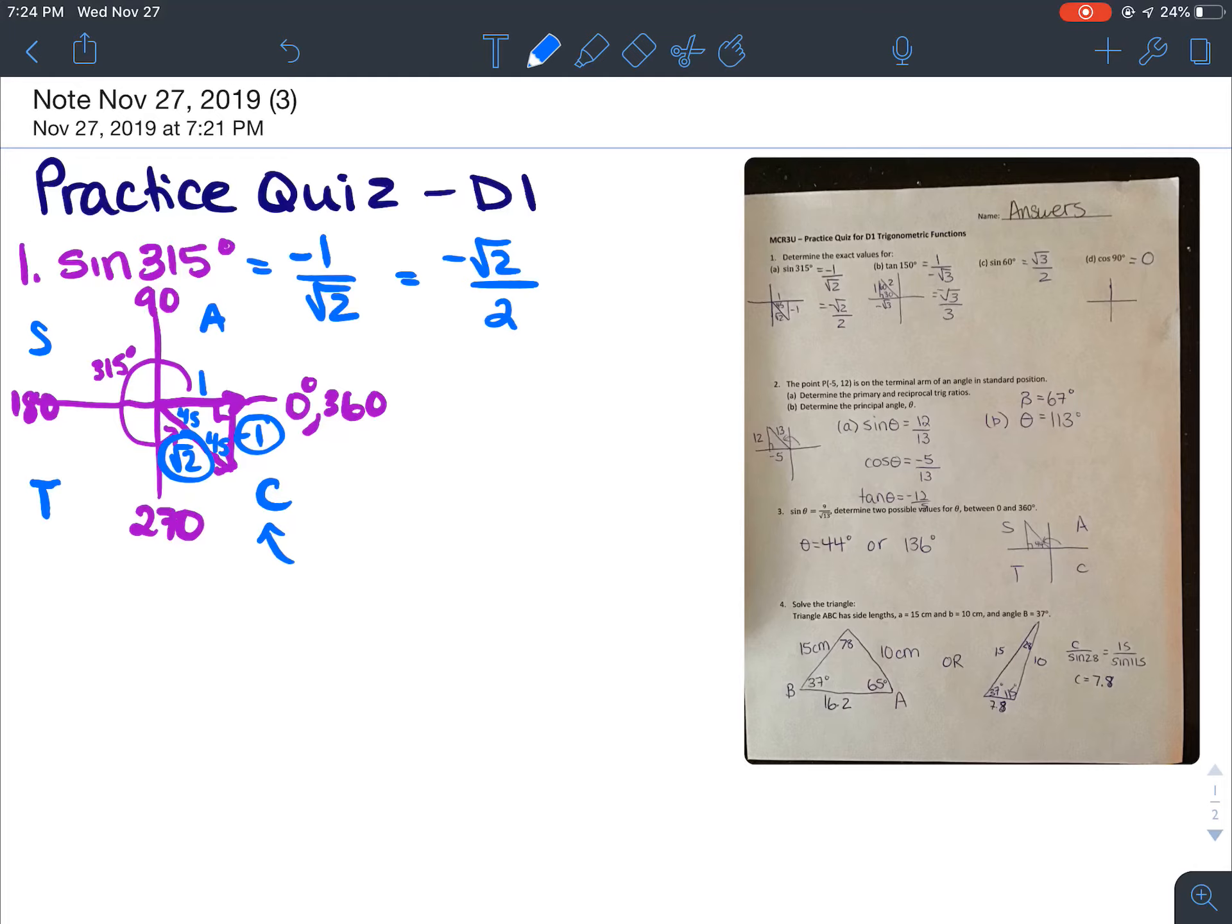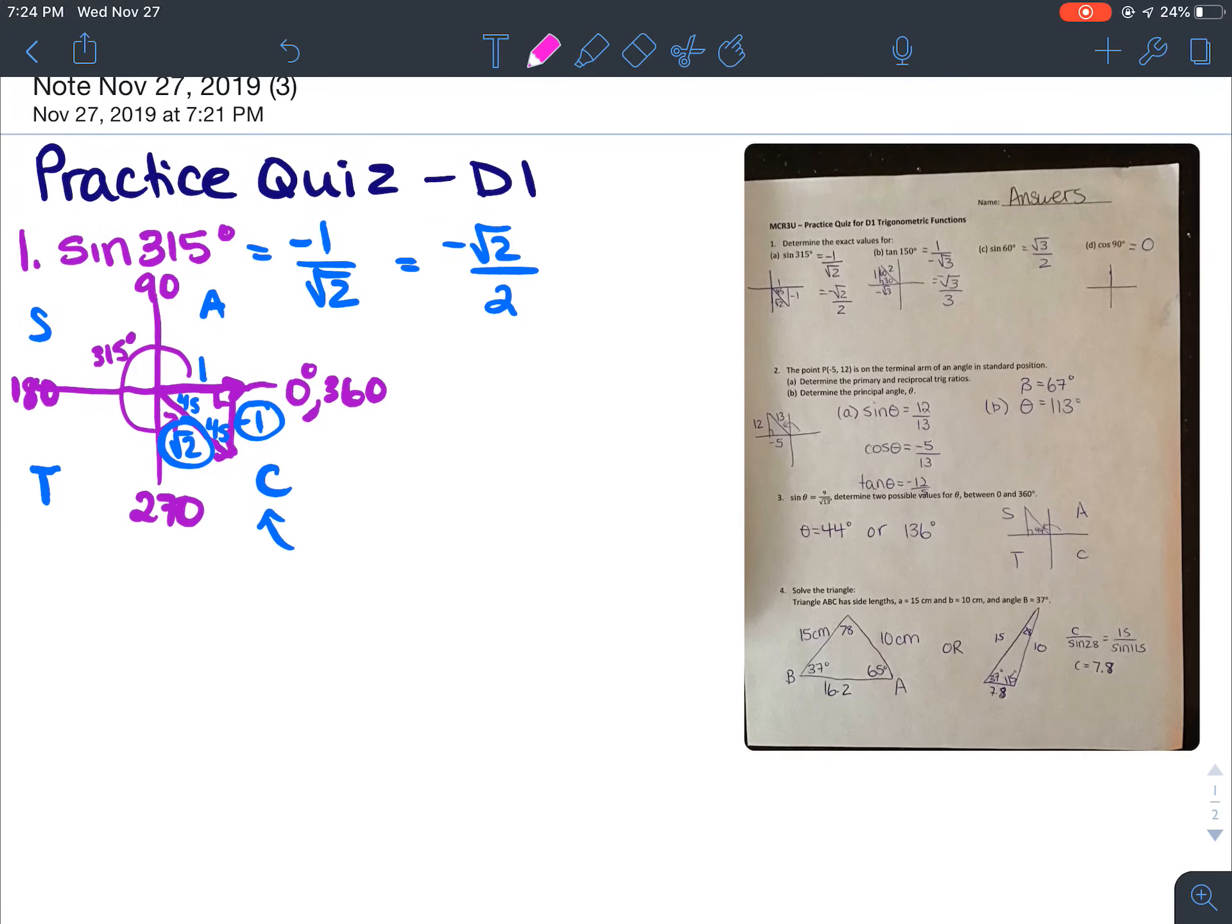So yeah, either answer is totally acceptable. So that's how you do the whole first row. So I'm not going to go through every single one, because they're all done the same way, just figuring out which quadrant they're in, and what angle it would be, and which special triangle.